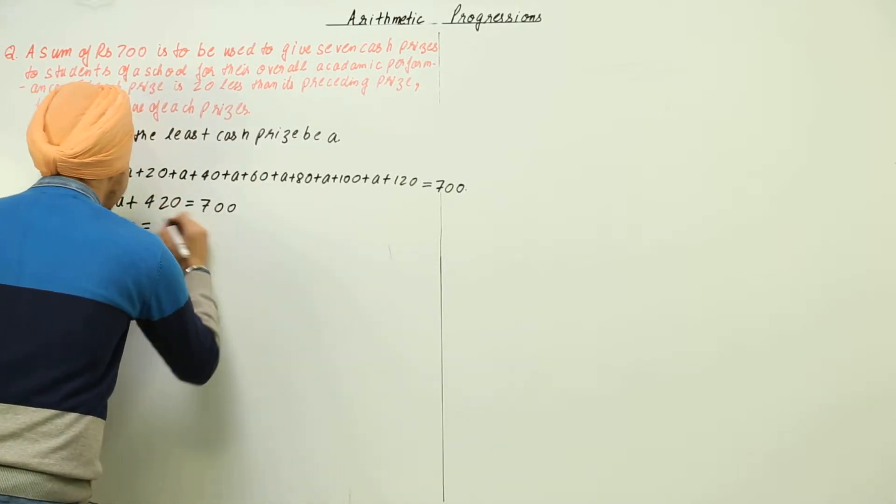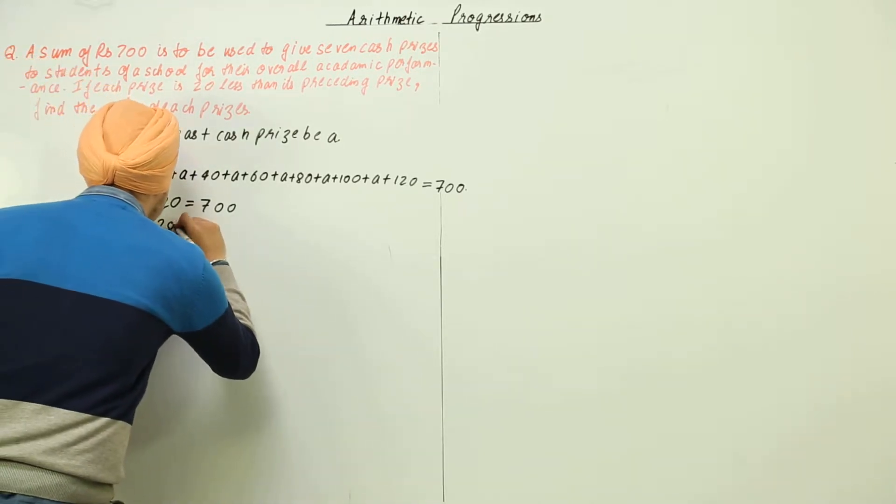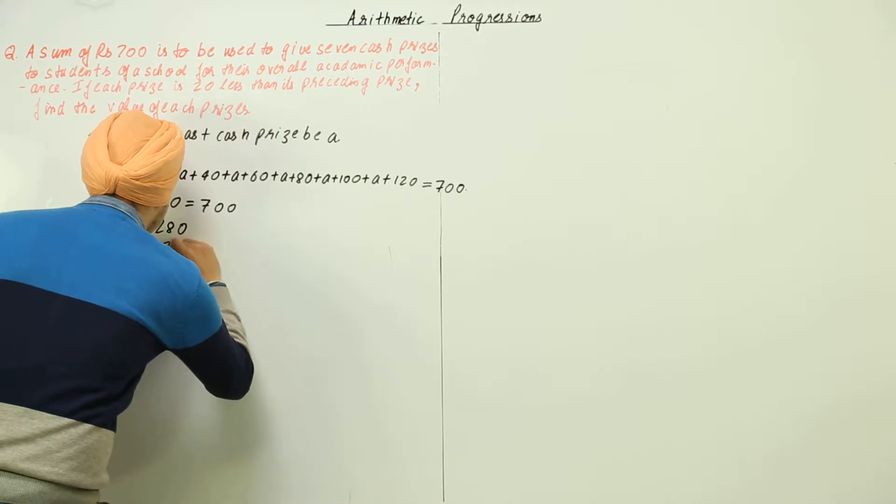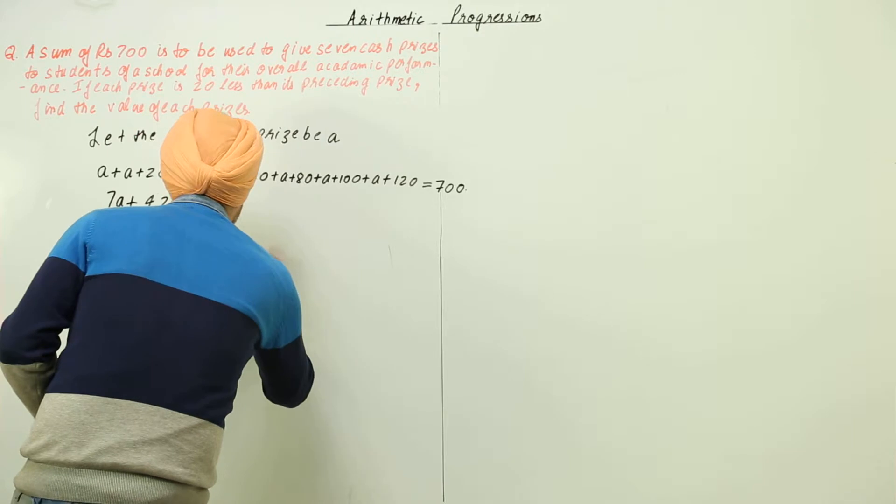7a is equal to 700 minus 420 is 280, and a from here is equal to 280 by 7, that is equal to 40.